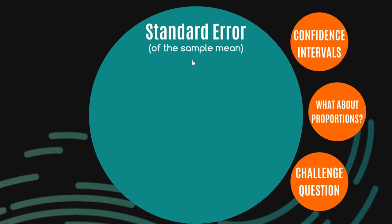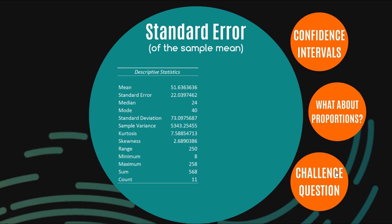Okay, so this is the standard error of the sample mean. As per usual, I'm going to go through the definition and the basics of it, and then I'm going to do some advanced topics here where we'll look at confidence intervals. We'll also look at the standard error of the sample proportion and see how calculations differ there, and then I'll offer you a challenge question which will hopefully stoke a little bit of discussion in the comments. But let's first check out what the standard error of the sample mean is all about.